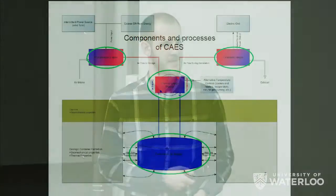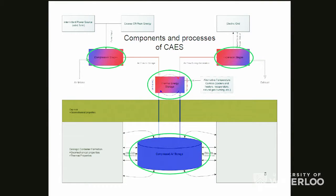We need this thermal management because — notice the air storage is all light blue — if we stick hot air down into our salt cavern, you will get instability and rapid shrinkage due to salt-creeping properties. In essence, CAES can be considered like a battery as well as a natural gas turbine — it's sort of the best of both worlds.